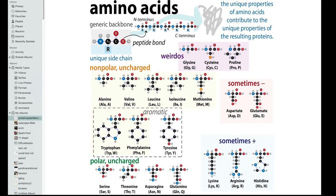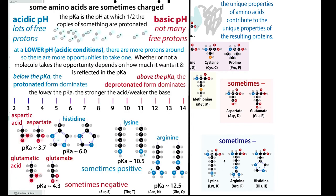What's also special are the unique R groups - the unique parts that stick off - because they have different properties. Some are negative and some are positive, and I say sometimes because it depends on the pH. pH is the measure of protons - H plus. Lysine, arginine, and histidine can take up protons in acidic solutions and become positively charged. Histidine is kind of iffy - it's around body pH so it can go either way - but lysine and arginine are basically always positively charged.